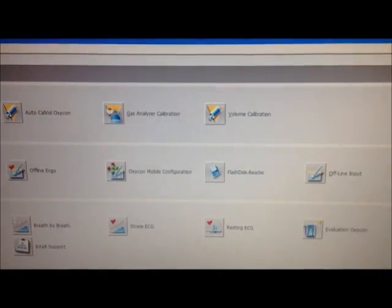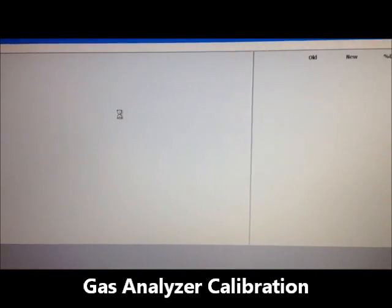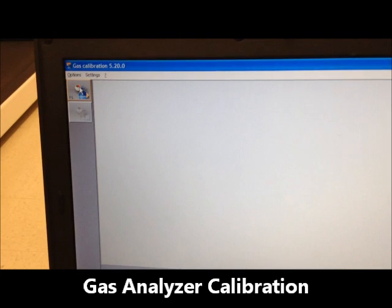And then for gas calibration we're going to go to gas analyzer calibration. You'll see a similar setup with the play button illuminated over here. To do gas calibration go ahead and click on the play button.